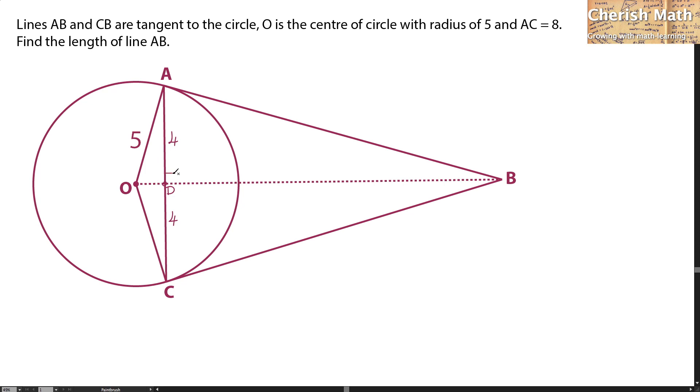Now, since this is at a right angle, the length OD would be 3 units by using the Pythagorean theorem.